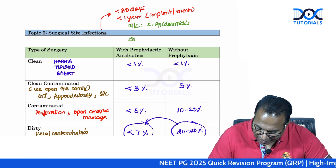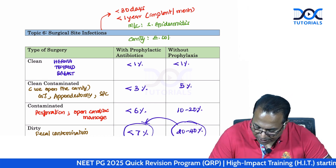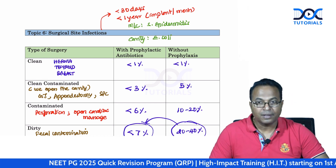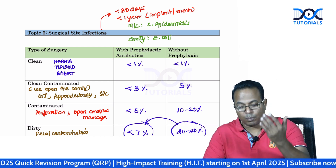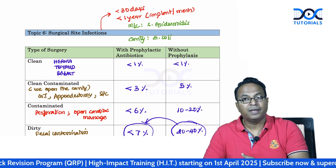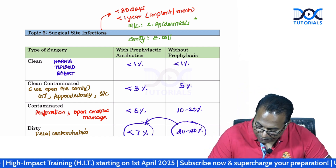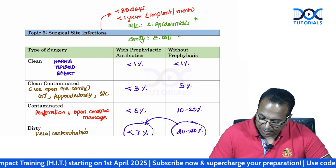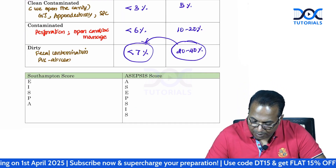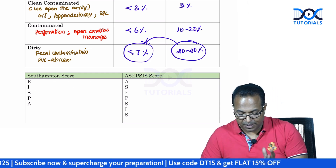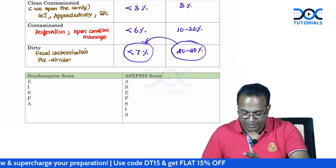If I open a cavity, the common infection organism is E. coli. For example, if I did a laparotomy with a bowel opened, it is E. coli. Otherwise, for hernia, thyroid, and breast surgeries, you get Staph epidermidis. So for a cavity-opened case, you get E. coli. Whatever may be the infection, we can grade them using scores known as the Southampton score and the ASEPSIS score.